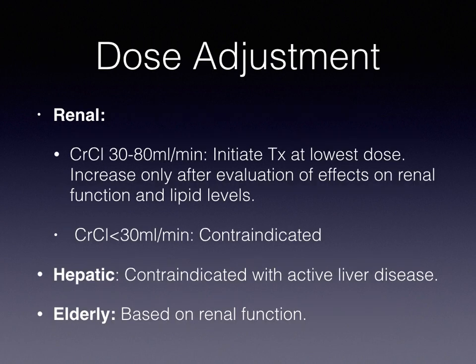Dose Adjustment: If a patient has a creatinine clearance from 30 to 80 mL per minute, initiate treatment at the lowest dose, increasing only after evaluation of effects on renal function and lipid levels. If a patient has a creatinine clearance less than 30 mL per minute, the medication is contraindicated. If a patient has active liver disease, this medication is also contraindicated. For elderly patients, make sure to assess renal function.